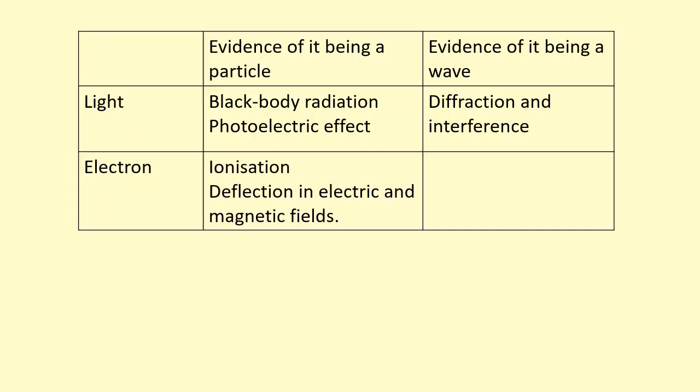Evidence for electrons being particles includes ionization, because when an atom is ionized, it loses 1.6 times 10 to the power of minus 19 coulombs of charge. So it loses a discrete or quantized amount of charge.